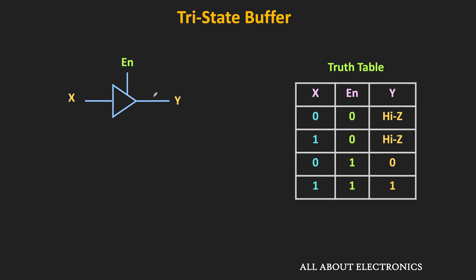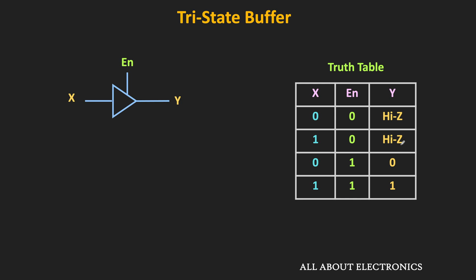This is the truth table of the tri-state buffer. When the enable input is equal to 0, then irrespective of the input, the buffer provides high input impedance and isolates the input from the output side. In this high impedance condition, the voltage on the output side could be either logic 0, logic 1, or even any intermediate voltage, but the output side is disconnected from the input side. When this control input is equal to 1, the output follows the input. So this tri-state buffer has three output states: logic 0, logic 1, and the high impedance mode. That is why it is known as the tri-state buffer or three-state buffer.